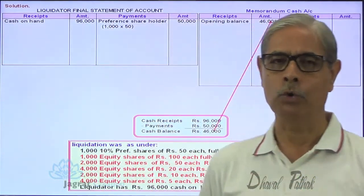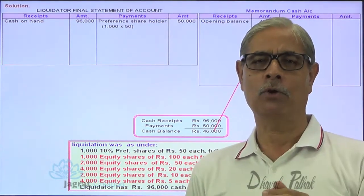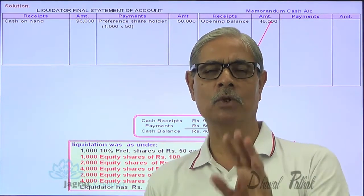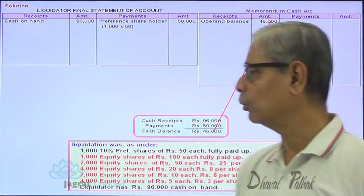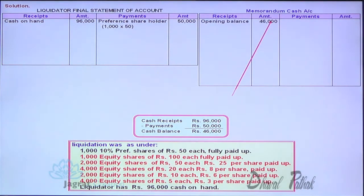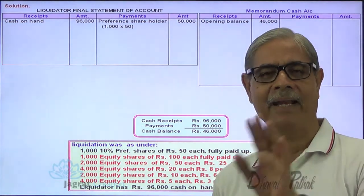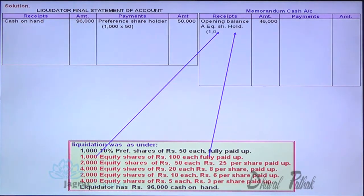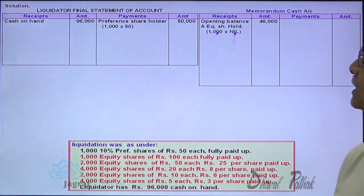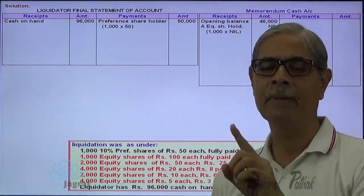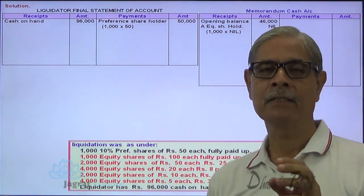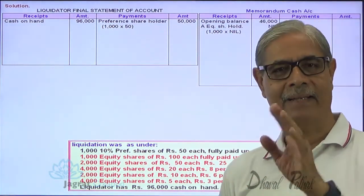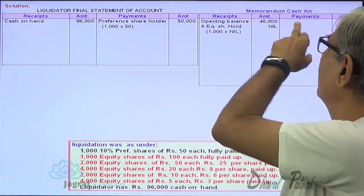In this memorandum cash account, I intend to demand from all types of shareholders whatever amount they have unpaid against the face value of their shares — making all shares fully paid up, 100% paid up. On 1,000 equity shares of ₹10 each which are already fully paid up, I can't demand any last call, so the amount demanded is ₹0. Even though nil is demanded, I must record this in the memorandum cash account so I can work out the refund to be made to them. Fully paid-up shareholders are entitled to a refund on a pro-rata basis from the cash available of ₹46,000.